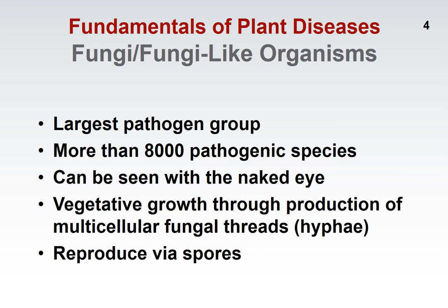Fungi can then go into a reproductive mode, and they can reproduce in a couple of different ways. In both methods, they produce what are called spores. These are seed-like structures, which are basically a propagative unit for the fungus, and these can be produced either asexually or sexually.